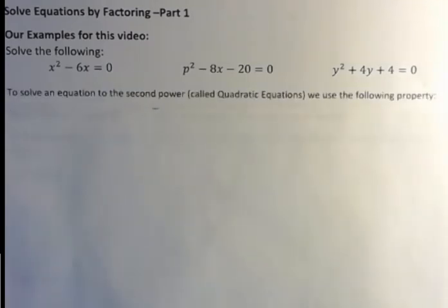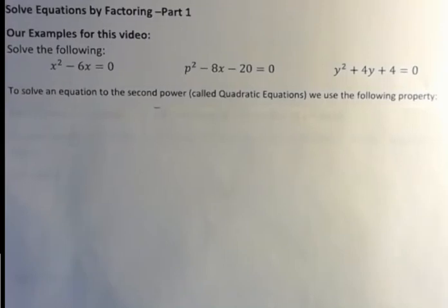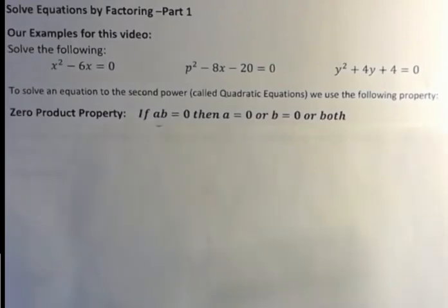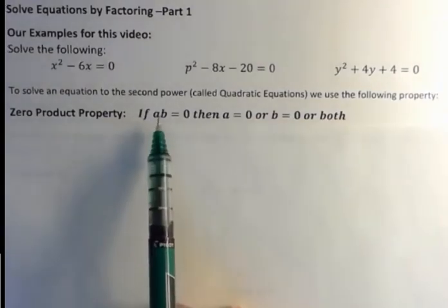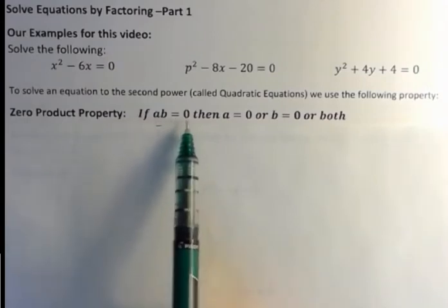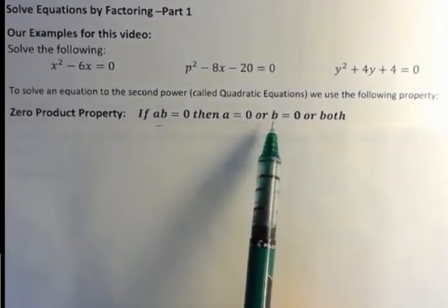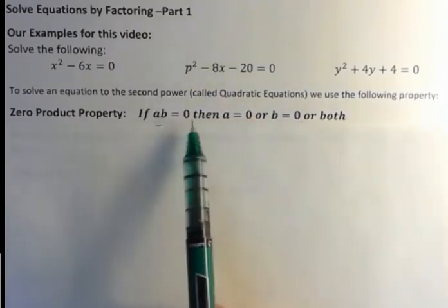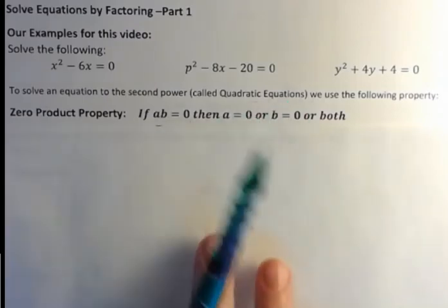To solve an equation to the second power, which are called quadratic equations, we use the following property, the zero product property. And what that says, if a times b equals zero, then a equals zero, or b equals zero, or both, because you can't multiply two things and get zero unless one of them is zero, or maybe both of them could be zero.